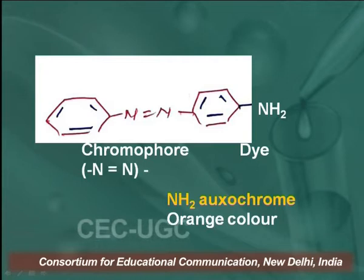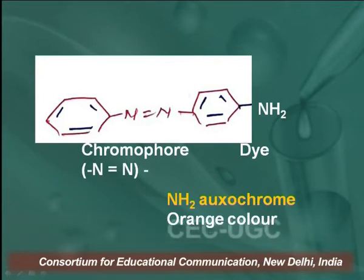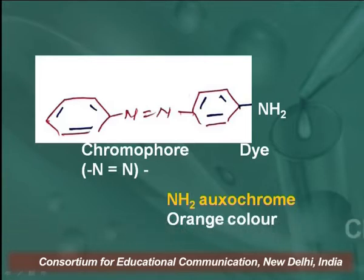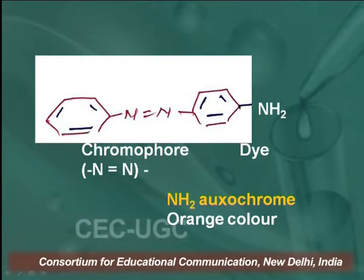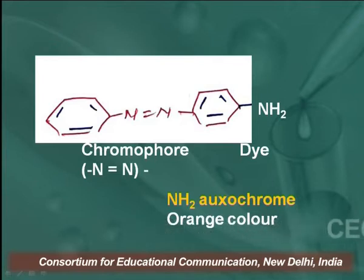One important point: in the previous part I told you about chromophores — there are two types: one is the dependent chromophore and another is the independent chromophore. Independent chromophores, like the azo group and nitroso group, mean that only one chromophore group is sufficient to bring out the colour.